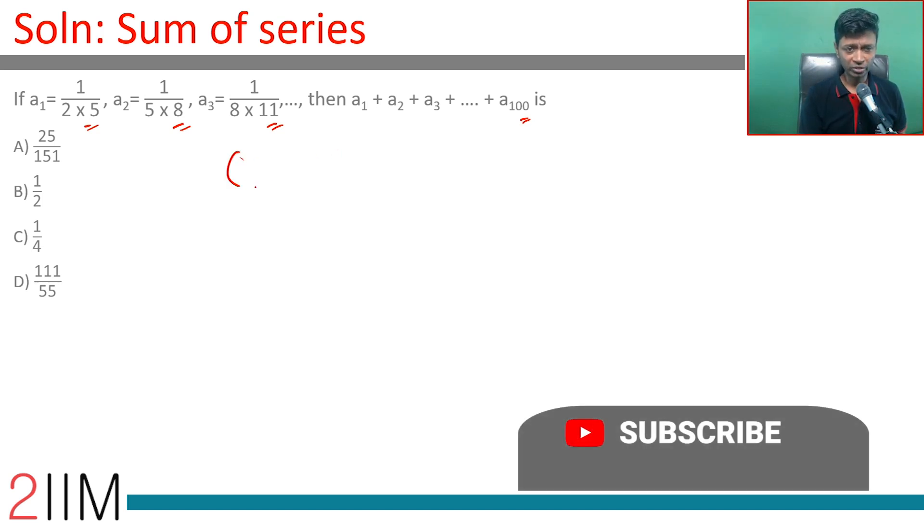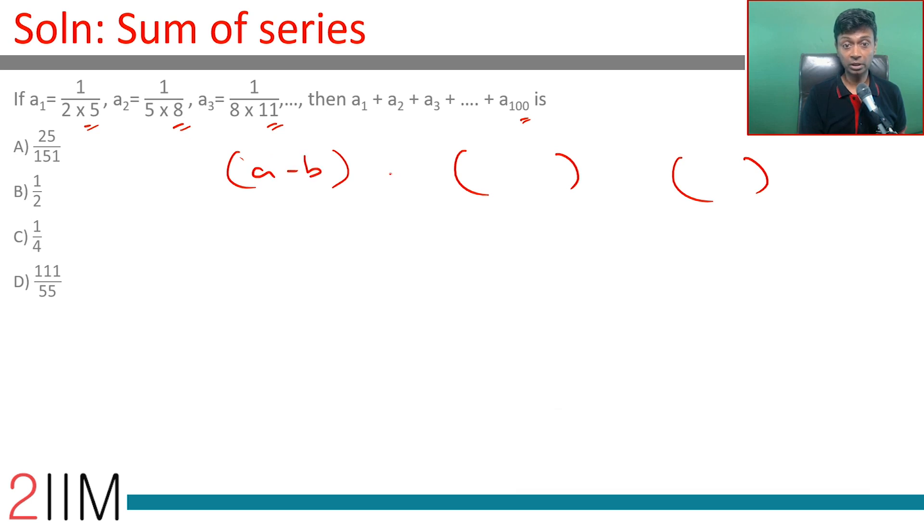This is going to be something of this form. Finally, we have to sense this: A-B plus B-C plus C-D, all the way till something.